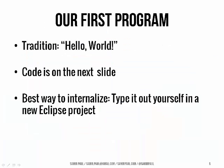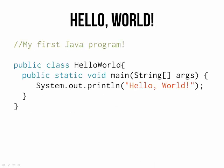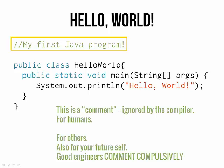Our first program, in the great tradition of all languages, is going to be printing the phrase 'Hello World' to the screen. The code is on the next slide. The best way to really understand this and start to memorize and internalize it is to type it out yourself in a new Eclipse project or a new file in Binks. I'll have a separate video showing exactly how to do that, and there are also directions on the class website.